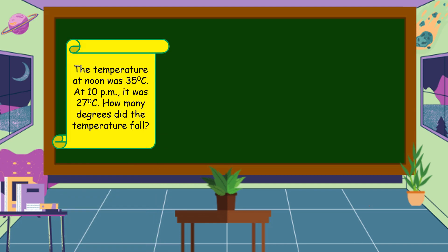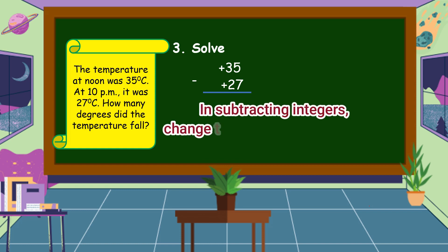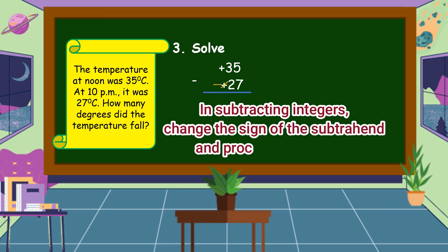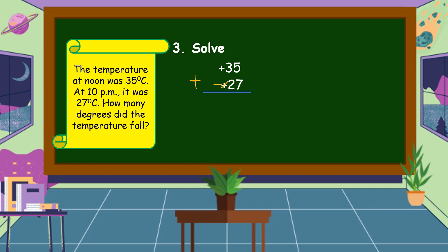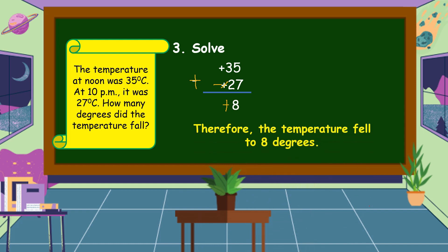The third step is we are going to carry out the plan. Let's solve the problem. Positive 35 minus positive 27. In subtracting integers, first we are going to change the sign of the subtrahend and proceed to addition. So our numbers now are positive 35 and negative 27. Since we have different signs, we subtract the numbers: 35 minus 27 is equal to 8, and the sign of the bigger number is positive. So our answer is positive 8. Therefore, the temperature fell by 8 degrees.